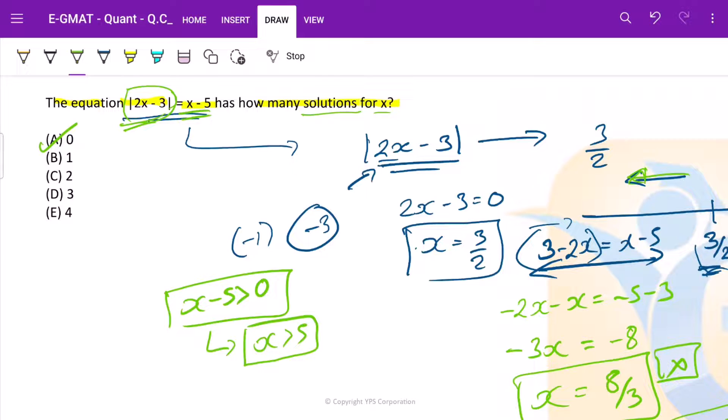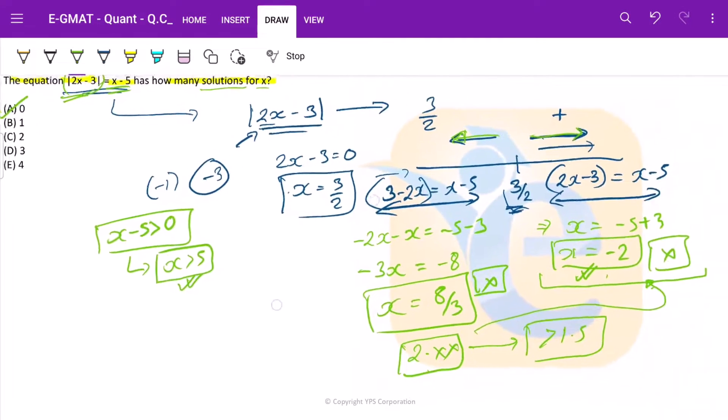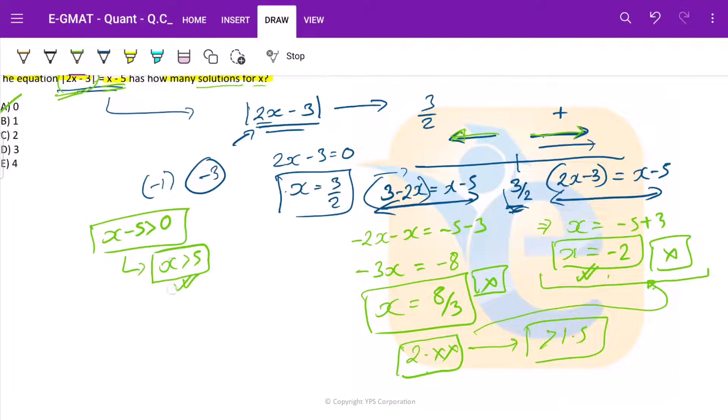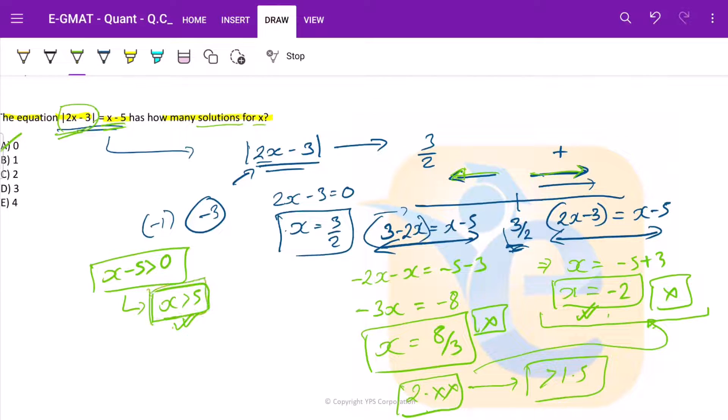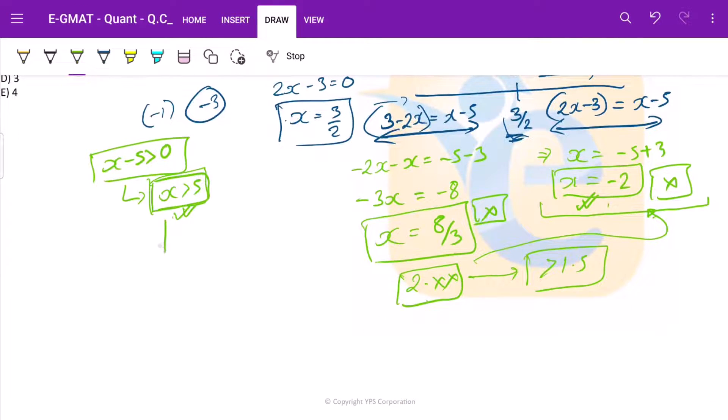Now if we use x > 5 and open the equation, this would be something like this because this is positive. x is greater than 5. Let us take step by step. x is greater than 5.